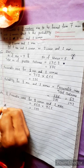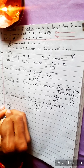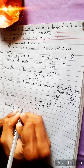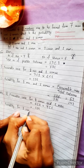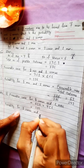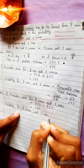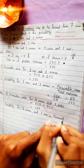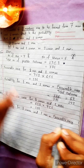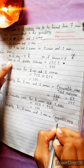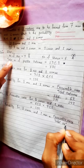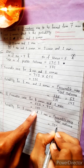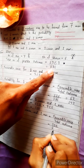The probability for two women and one man equals favorable cases divided by total possible outcomes. The favorable case we just calculated is 105, and the total outcome is the same 286. So the probability is 105 over 286.